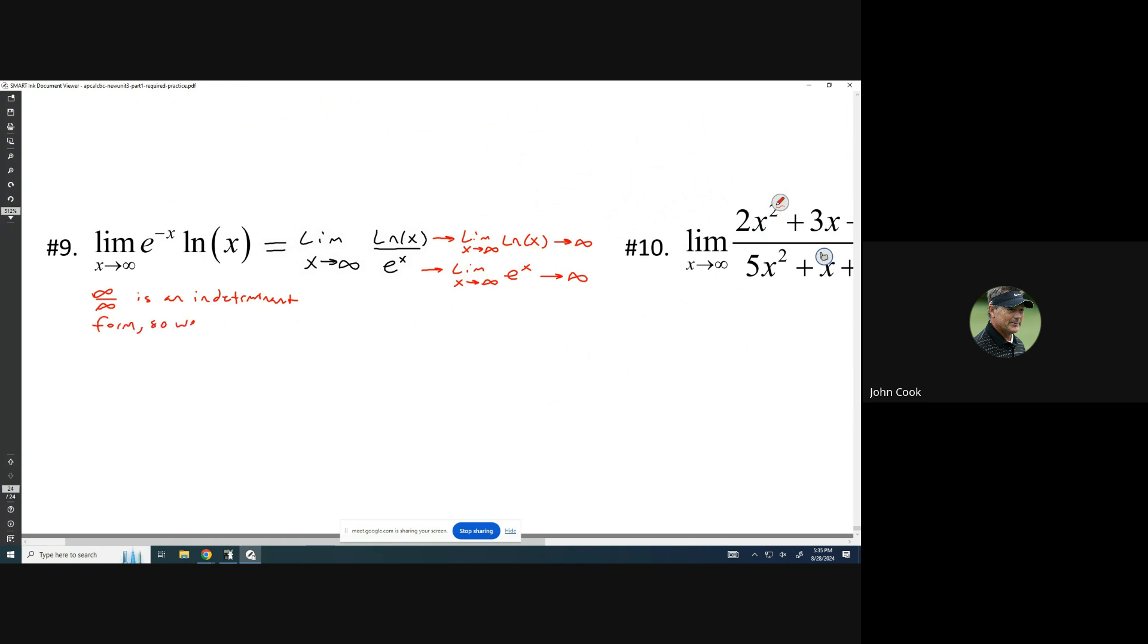So we use L'Hopital's rule. All right, so let's use L'Hopital's rule now. We're going to take the derivative of the top and the derivative of the bottom. So this is equal to the limit as x goes to infinity of the derivative of natural log of x is 1 over x. The derivative of e to the x is e to the x. So what I'm going to do is move that x into the denominator here. So I get the limit as x goes to infinity of 1 over x e to the x.